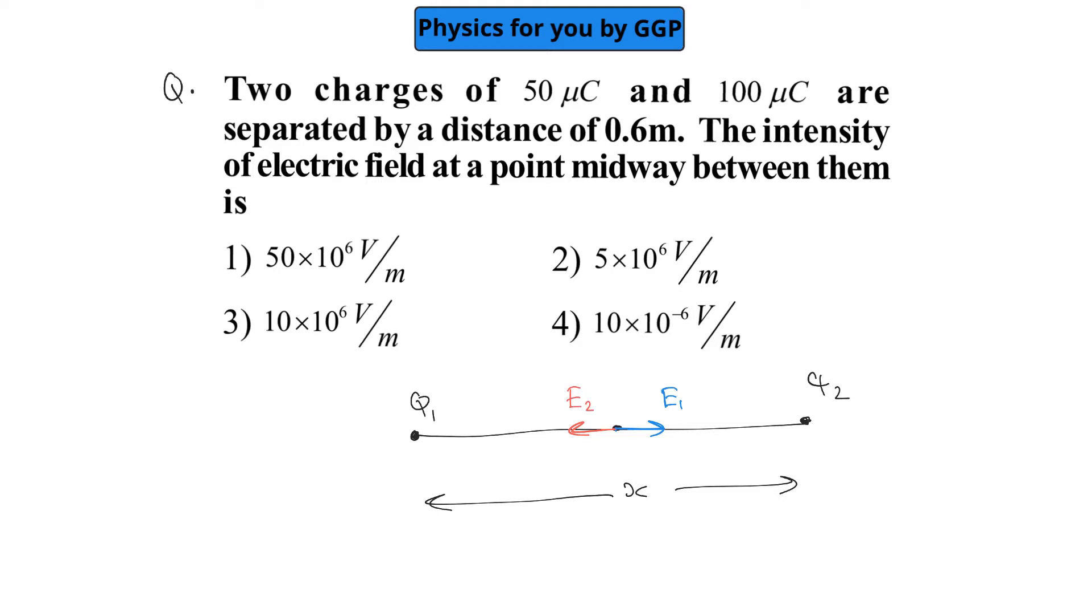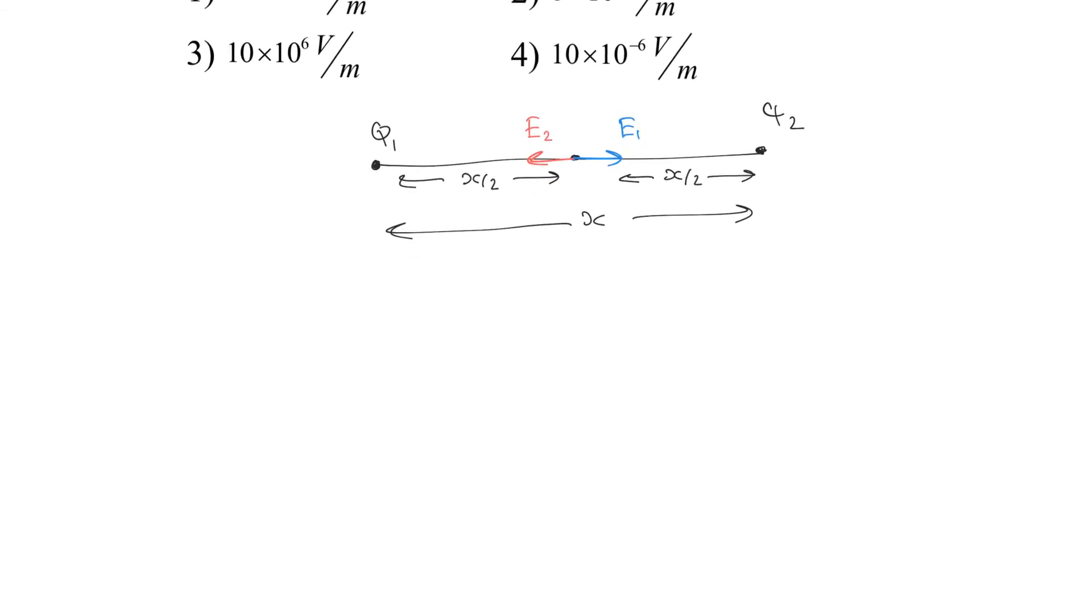As they are moving in opposite directions, we can write the net electric field will be equal to E1 minus E2, or E2 minus E1. As we are taking the distance as X, the distances can be taken as X by 2 and X by 2.